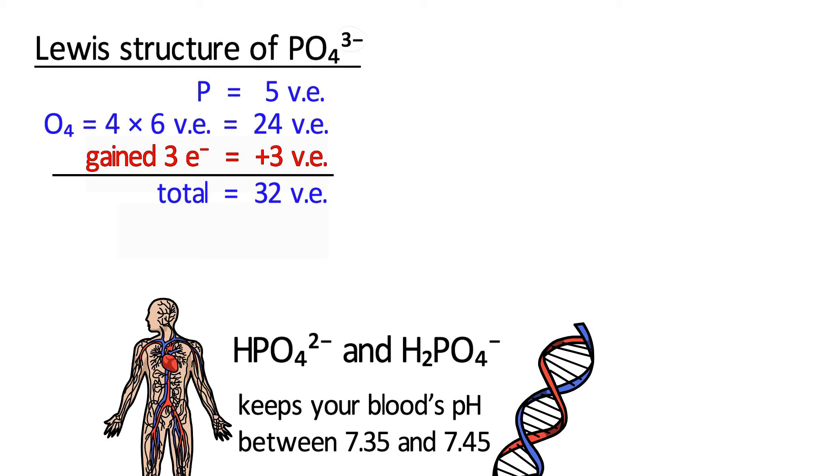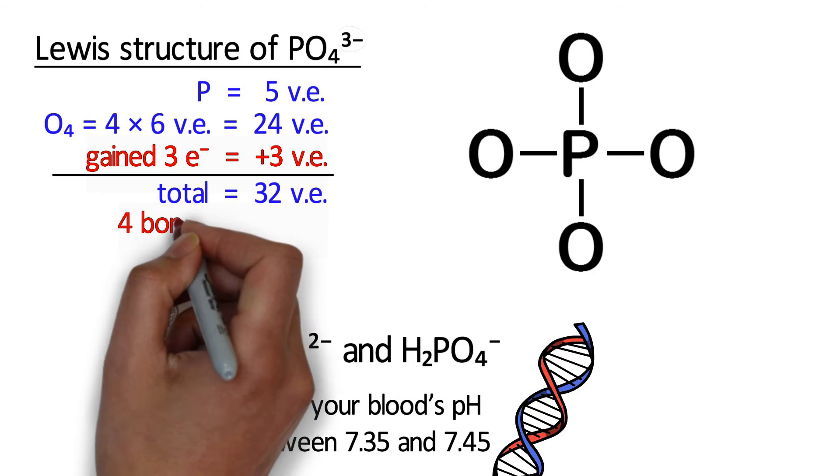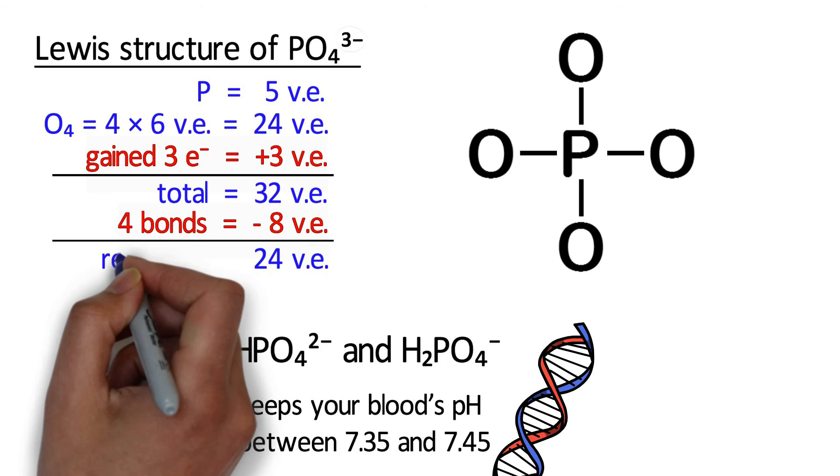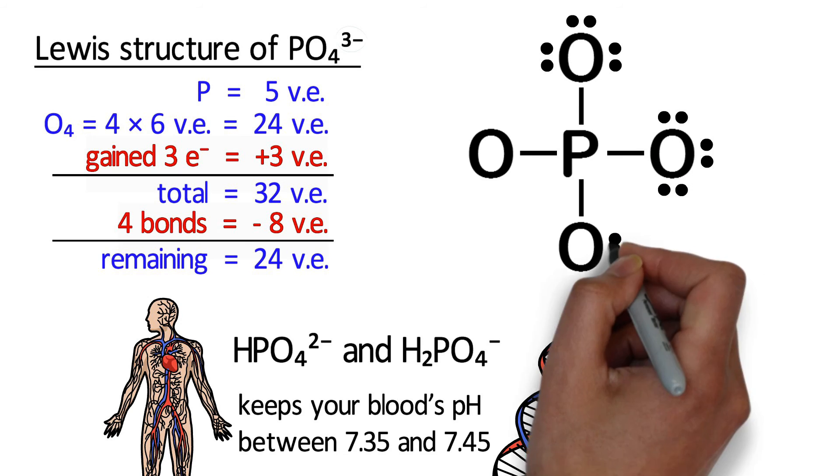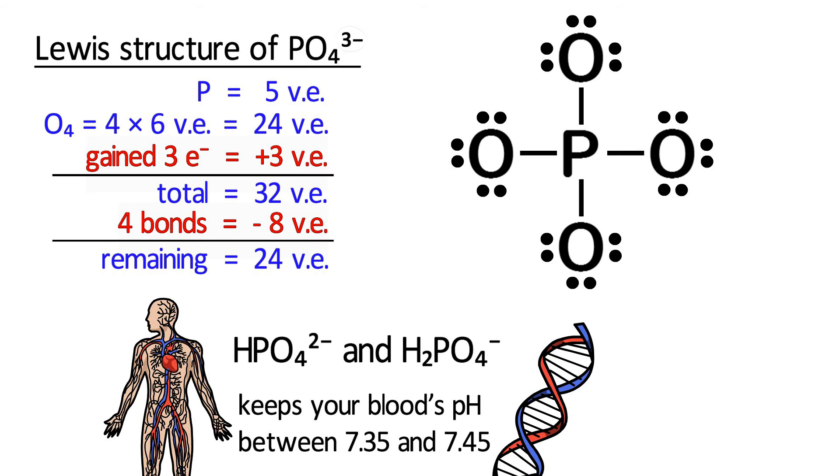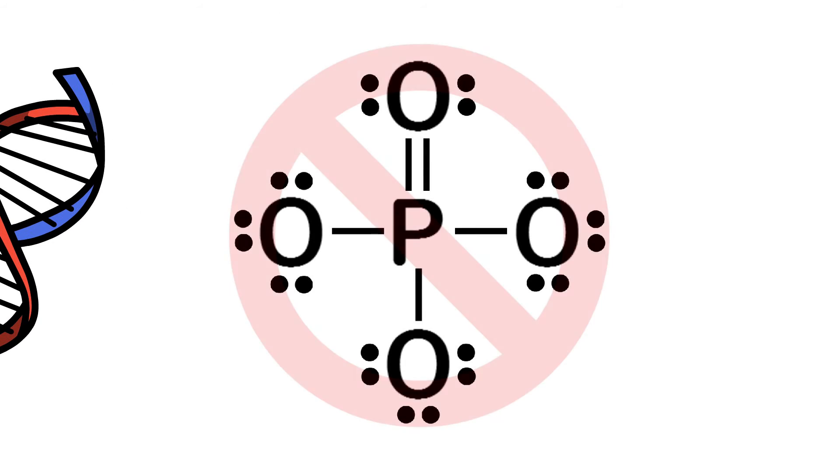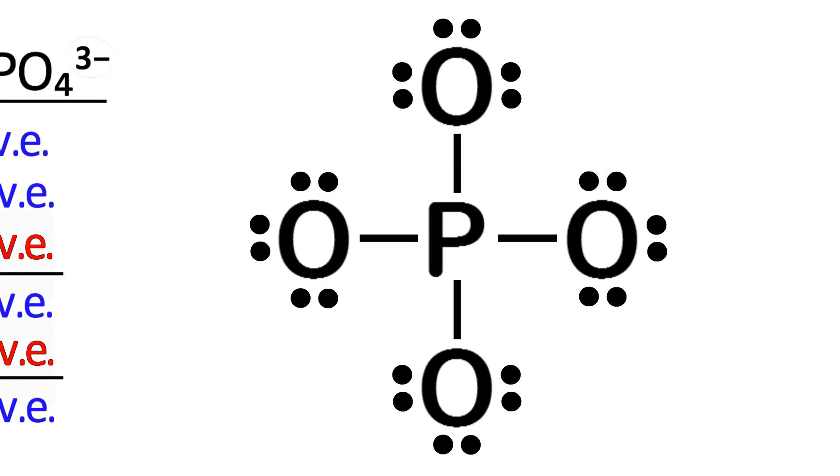Please pause the video again and try to draw the Lewis diagram of phosphate. Phosphorus is the central atom because there is only one and because it tends to form more bonds than oxygen. After drawing single bonds to all the oxygens, there are 24 valence electrons remaining. If we distribute those 24 valence electrons as lone pairs on all the oxygens, every atom has an octet and there is no need to form any double or triple bonds. Perhaps you have seen diagrams before that show phosphate with a double bond, but those are outdated and incorrect. High-level calculations support this diagram that we just drew.